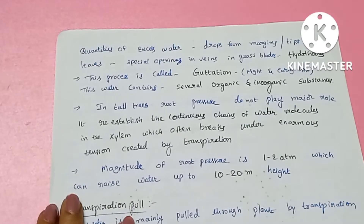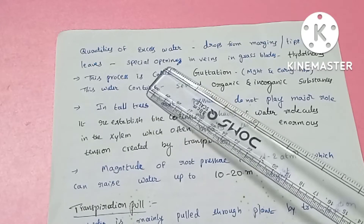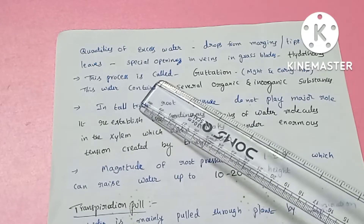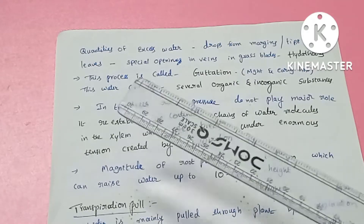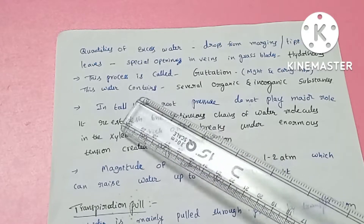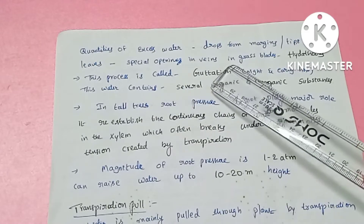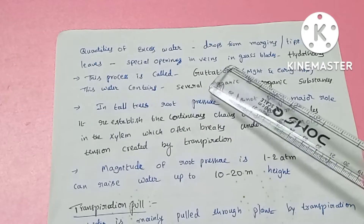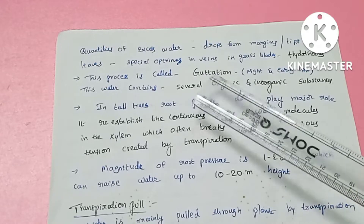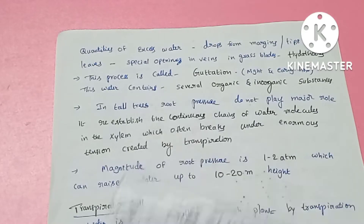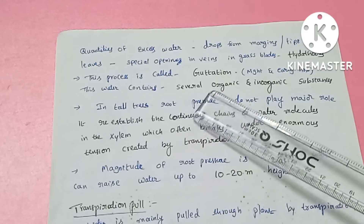There is a little bit of excess water in the plant. The leaf margins and leaf tips will leak as droplets. There are some special openings on grass blades called hydathodes, and these hydathode openings will leak water as droplets. This process is called guttation.